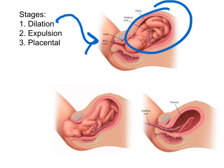At some point after labor begins, anywhere from a few hours to a couple of days, the cervix dilates to 10 centimeters. At this point, contractions will be so strong that the mother can actually push the baby out through the vagina — this is the expulsion stage.